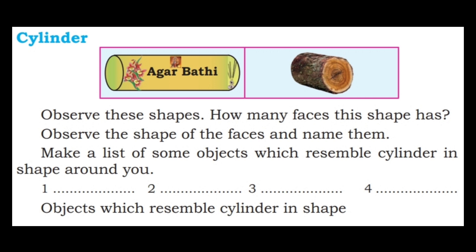Make a list of some objects which resemble a cylinder in shape around you. Objects which resemble a cylinder in shape: agarbatti box, a tree trunk, a bottle for drinking water, a glass — list objects with cylindrical shapes around you.